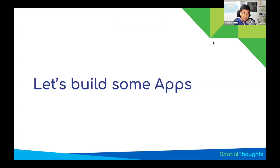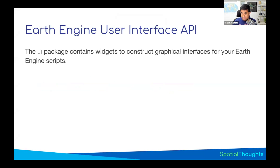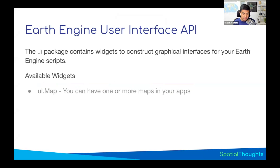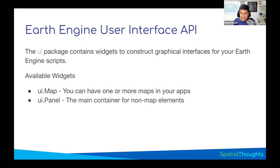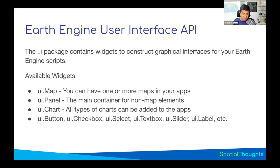Let's build apps. How do we build apps in Earth Engine? We use the UI module, which contains all the widgets. So far we've used the EE module for Earth Engine API functions and the map module for the map — we haven't yet used UI beyond UI.chart. The UI module contains widgets including UI.map for manipulating the map, panels for displaying information and charts on the side, buttons, checkboxes, drop-down selectors, sliders, and more. Let's dive into the code and learn how to use the interface API.